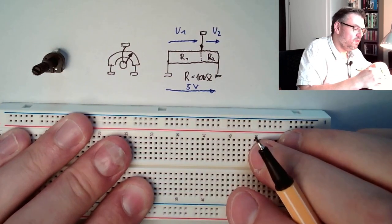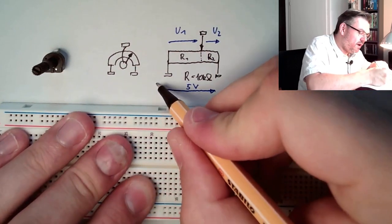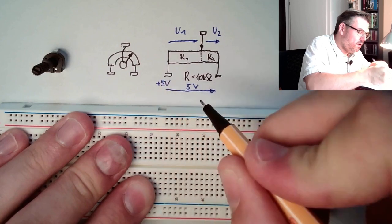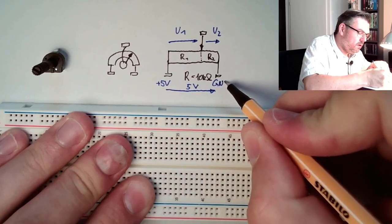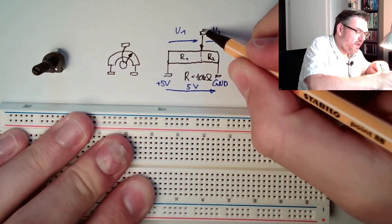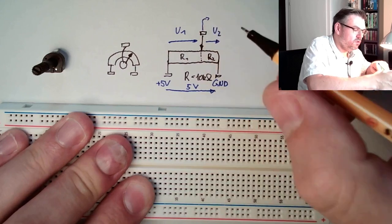So if here is plus 5 volts and here is ground, this would have the voltage U2.